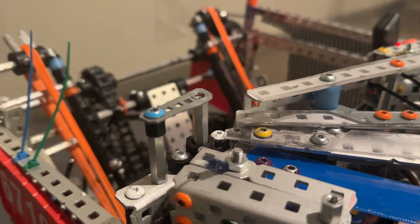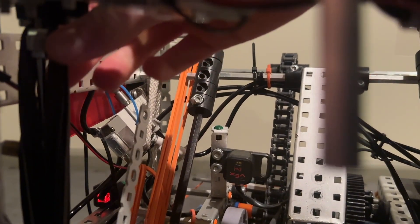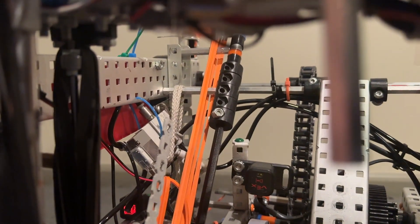That cylinder is pushing up into this lock bar and it actually has rubber bands pulling it down. You can see them, those are the rubber bands right there. It's actually pulling it down so you actually need air pressure to keep it up.